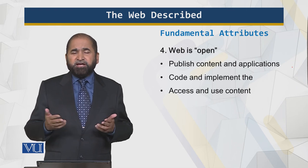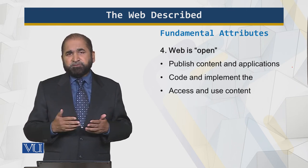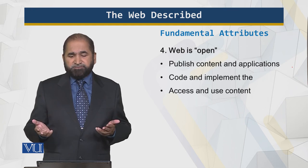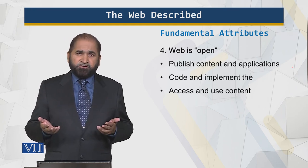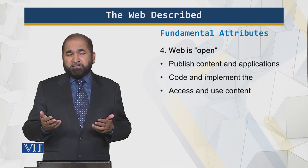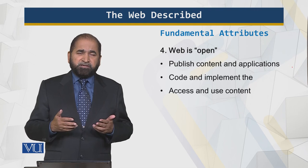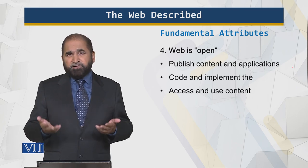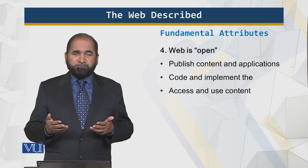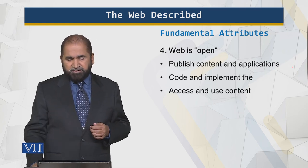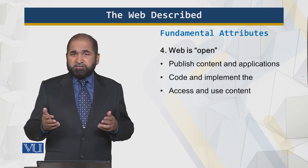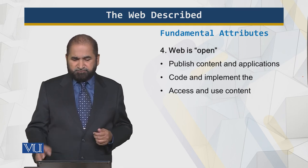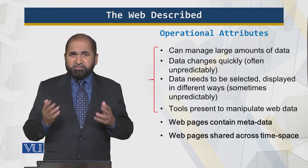The web is open, meaning you can publish content and applications without paying anybody. You can publish using HTML, PNG format, JPEG, or WebM for movies — you don't have to pay royalty to anybody. You are free to write code and implement without paying anything. There are freely available licenses to use. You can also access and use content freely available on the web without paying any license fee or royalty. That is what is meant by the web being open.